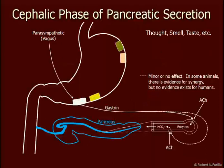As with the gastric phases, there are also three phases in pancreatic secretion. First is the cephalic phase, caused by thinking about food, smelling food, or tasting food. This triggers the parasympathetic nervous system to release gastrin. Gastrin and ACh from the parasympathetic nervous system trigger the acinar cells to secrete enzymes. ACh also enhances bicarbonate secretion. In some mammals, gastrin also assists in bicarbonate secretion, but this is drawn in a broken line here because there is no evidence that this happens in humans.